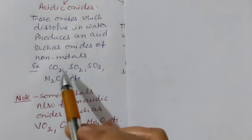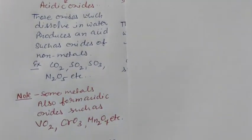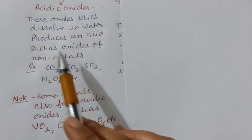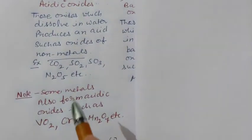Such types of oxides, all these oxides when they react with water, they form any acid. That is why they are called acidic oxides. Acidic oxides are majorly non-metallic oxides.